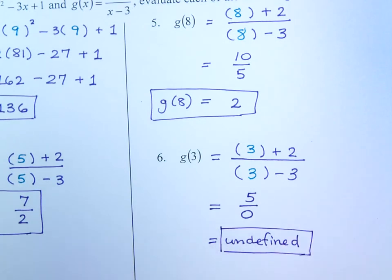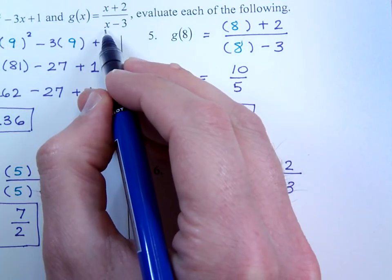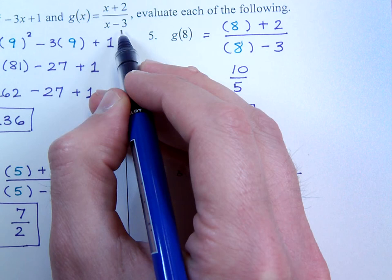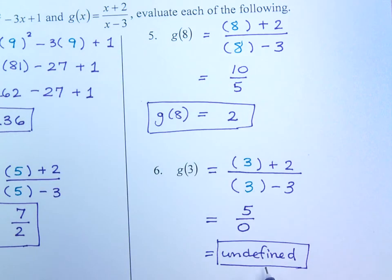And what that tells me, what we should remember, is that you can't plug in a value that's going to make the denominator equal 0. And in this function g of x, you see that if you plug in 3 here, 3 minus 3 is 0, and that's going to be undefined. So 3 is not even part of the domain for g of x. So this is undefined.